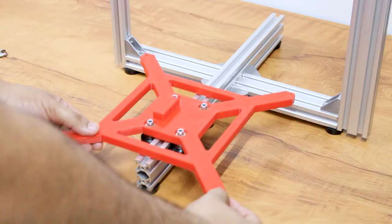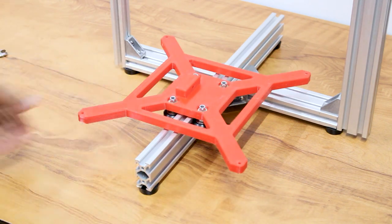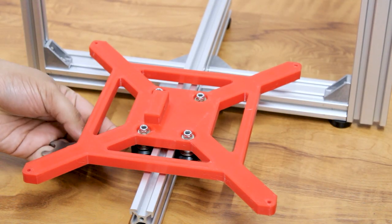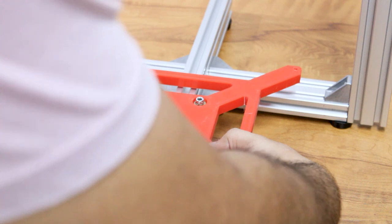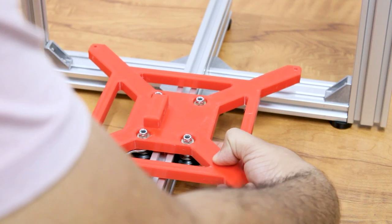Now gently insert the plate on the Y axis profile and turn the eccentric spacers using a spanner so that the wheels are close and have a tight grip on the profile.